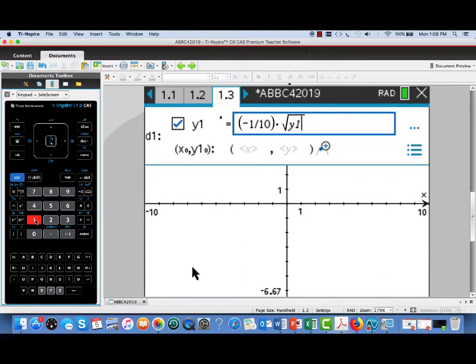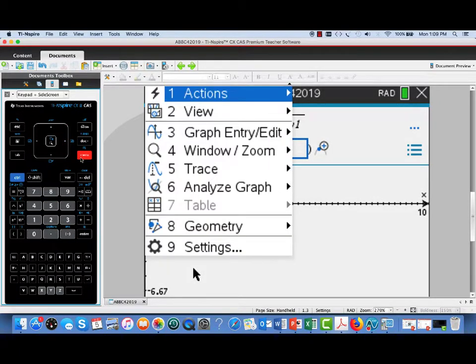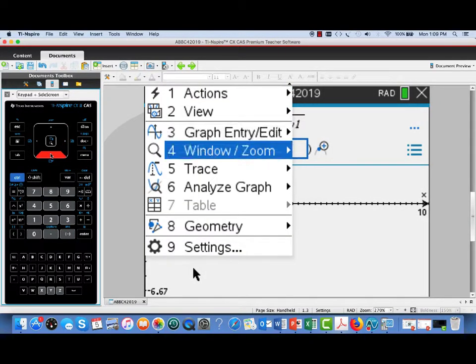Now, once that's entered, we also have an opportunity to enter an initial condition. Here our independent variable is x, so we're using that in place of t. So, I'll put in zero for x sub-naught and five for y1 sub-naught. That's our initial condition.